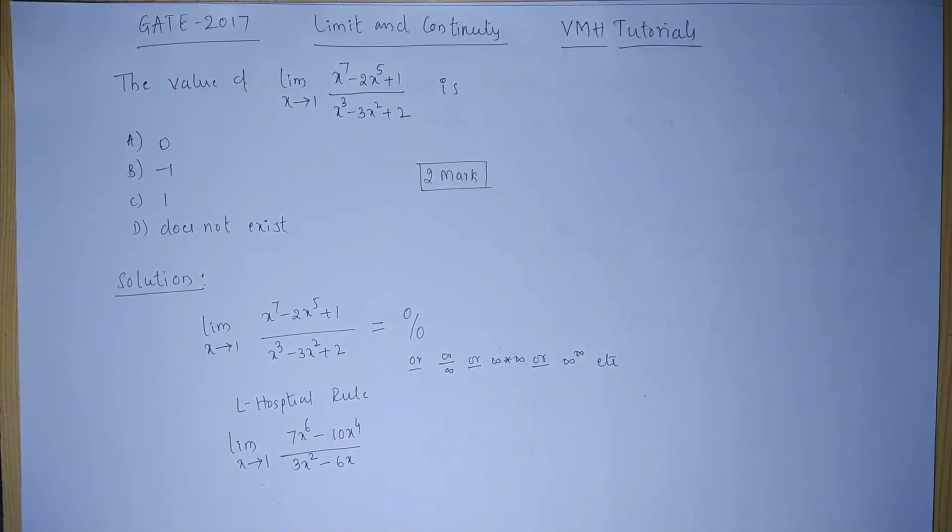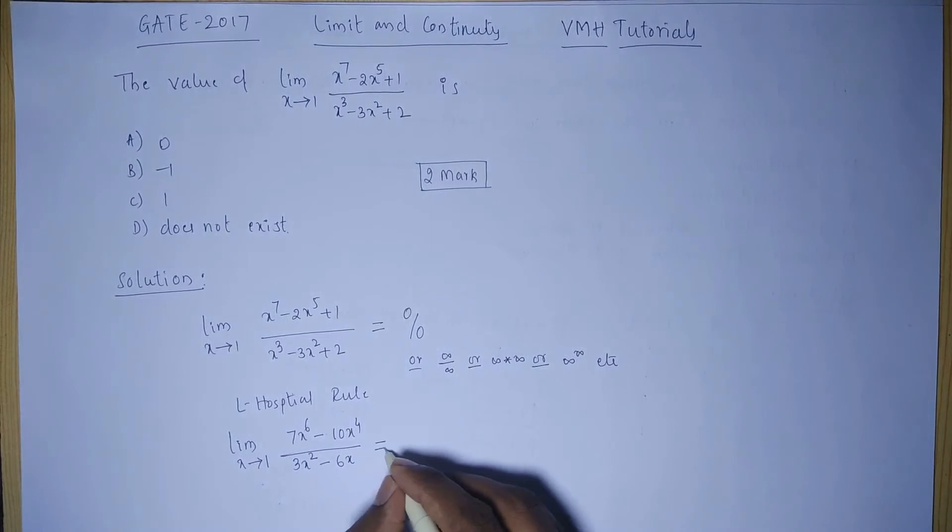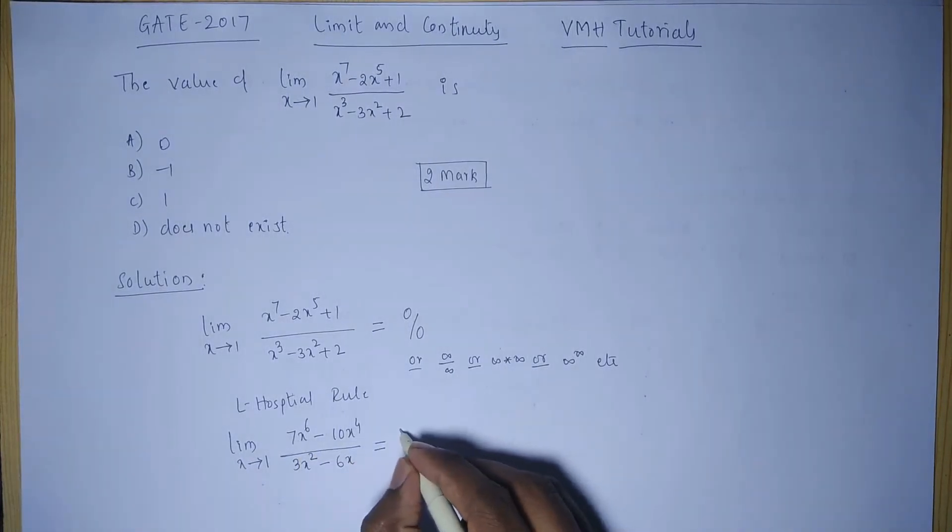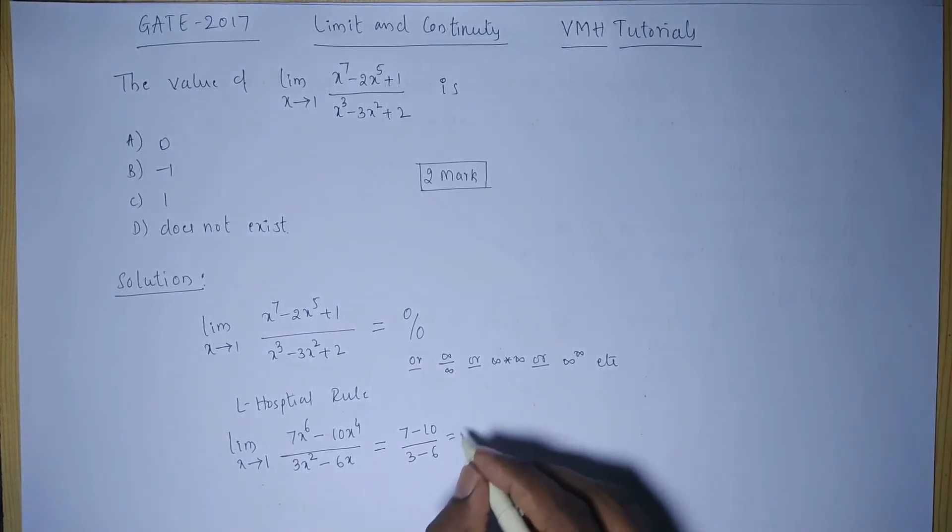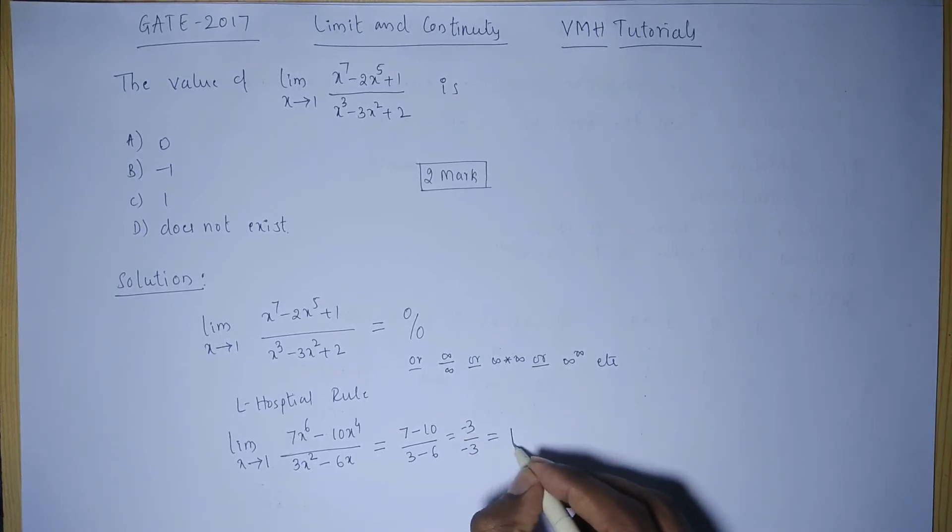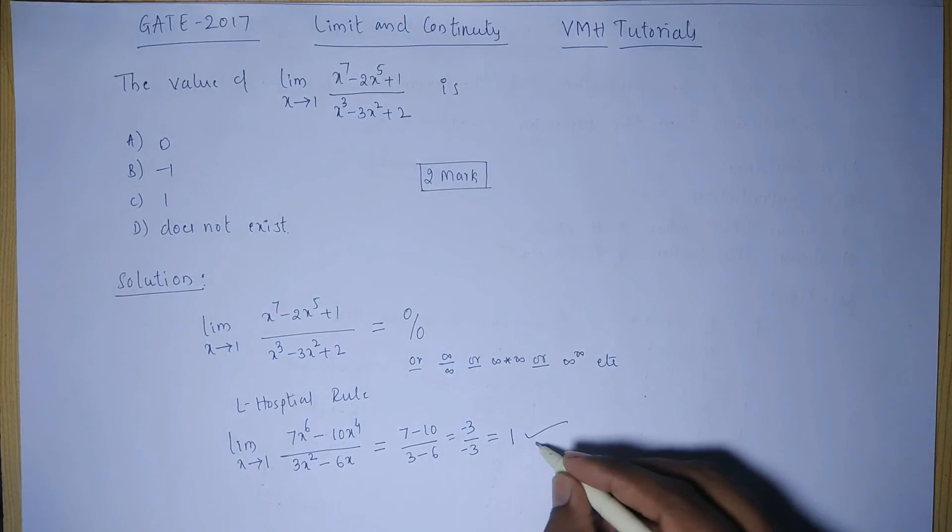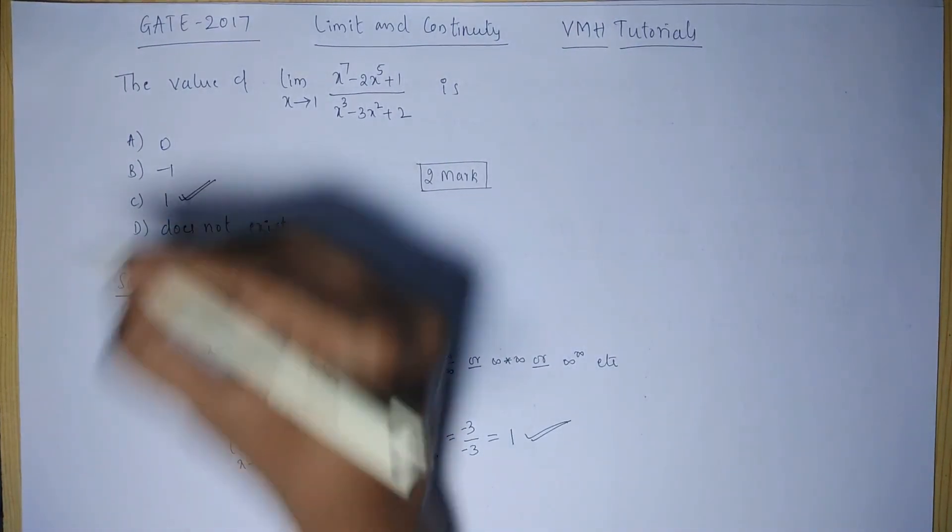Now, put the value of x equals 1. If you put the value of x equals 1, this will become (7 - 10) divided by (3 - 6), which equals -3 divided by -3, which equals 1. So the value of the given expression is 1 in this case, that is option number C.